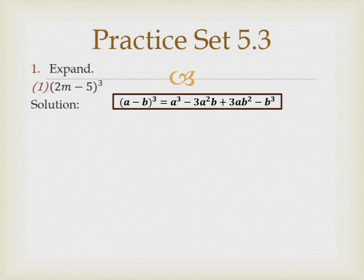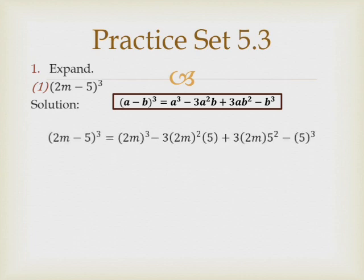Make a habit of putting a box around the identity to highlight it. Now we write the sum: (2m minus 5) raised to 3. Comparing with the formula, we find that a means 2m and b means 5, so we substitute these values accordingly.